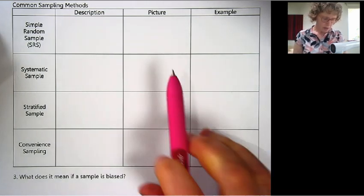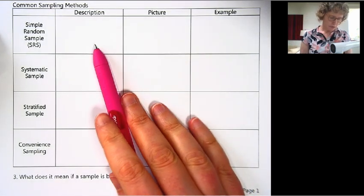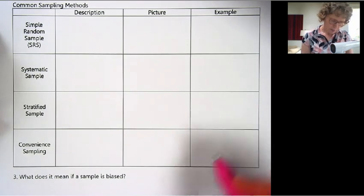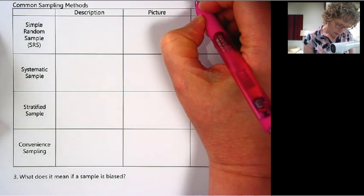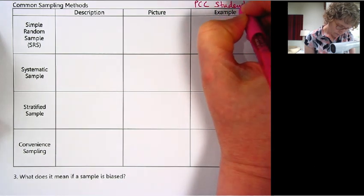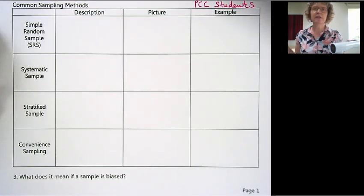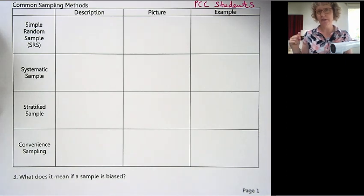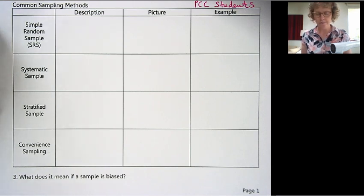And for each one, I'm going to draw a picture and write a description and give an example. So for example, let's say we want our population to be PCC students. We could even think of the same example that we used in the last video, of the proportion of students who have been evicted.